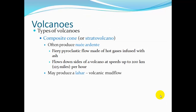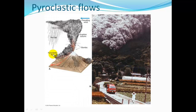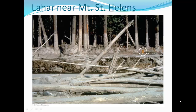Composite cones often produce nuée ardentes — fiery pyroclastic flows of hot gases infused with ash that flow down the sides of volcanoes at very fast speeds, up to 125 miles per hour. They may also produce a lahar, a volcanic mud flow. After Mount St. Helens erupted, a lahar flowed through and was deep enough to fell very tall trees, leaving a visible high-water line on the landscape.